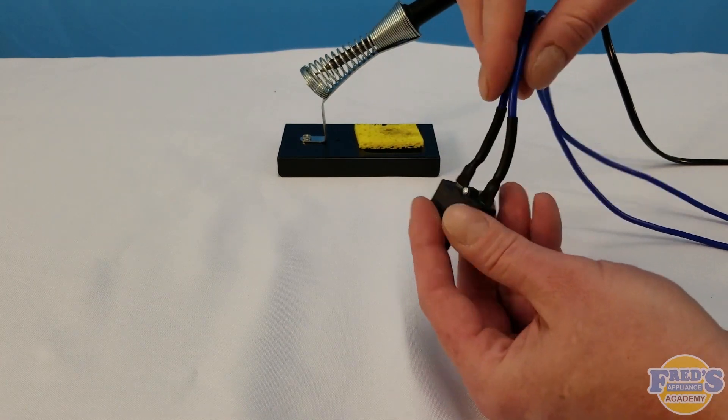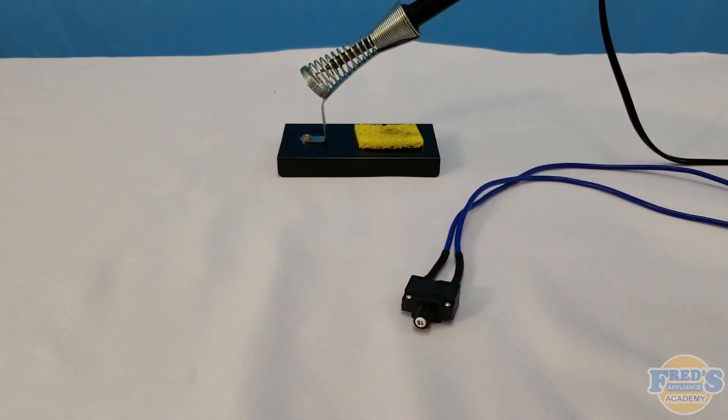Once you have the shrink tube being shrunk down, go ahead and check around to make sure you don't have any exposed wiring or terminals.